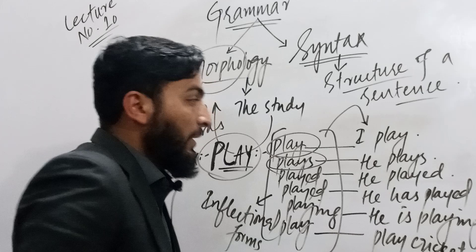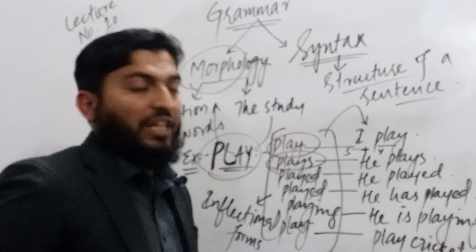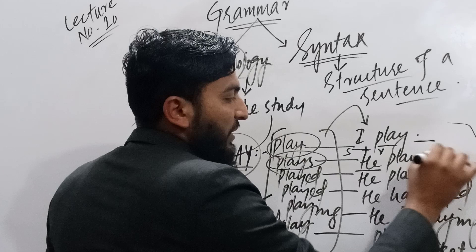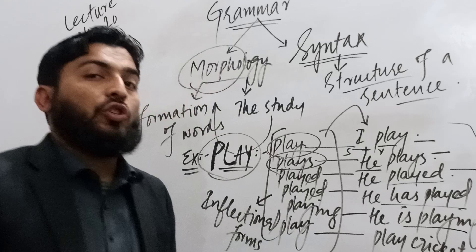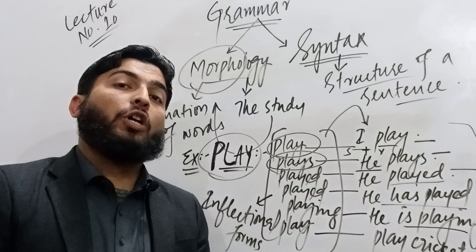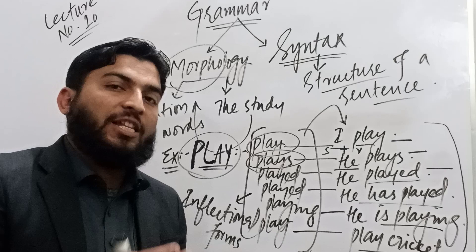Syntax forms a structure of subject plus predicate. Each tense is identified here: 'I play' is present indefinite, 'he played' is past indefinite, 'he has played' is present perfect, 'he is playing' is present continuous, and 'play cricket' is the imperative structure. The structure of the sentence can be divided into five patterns of complement — for instance, subject plus verb with no object is called an intransitive verb.